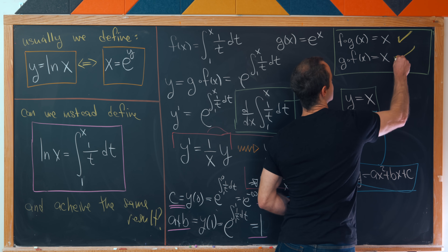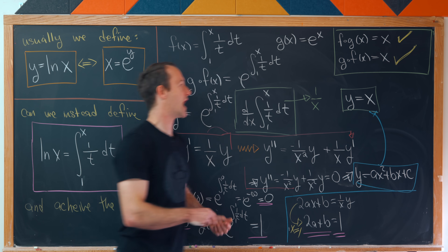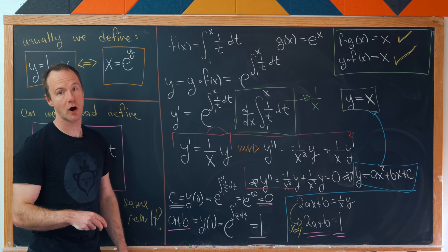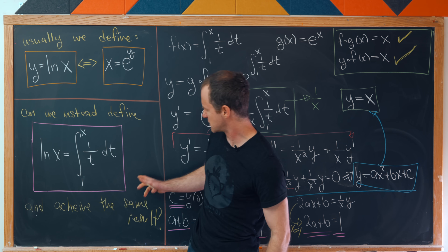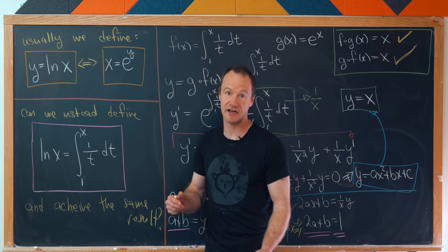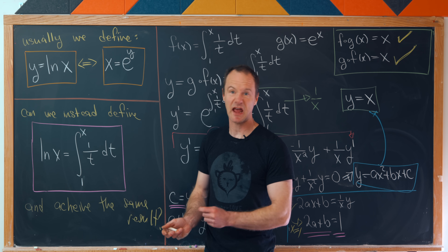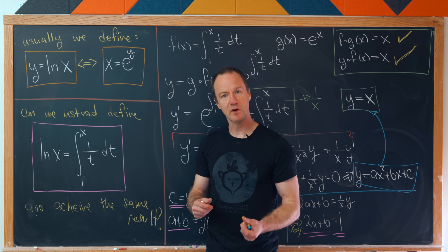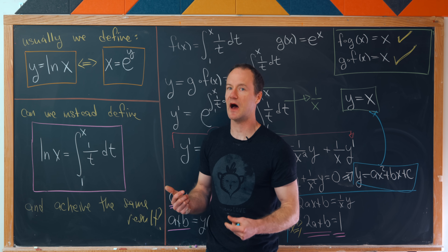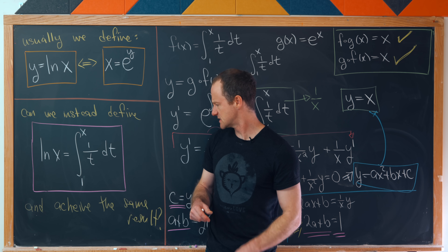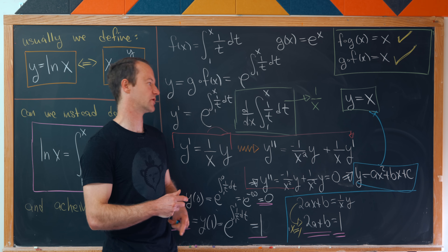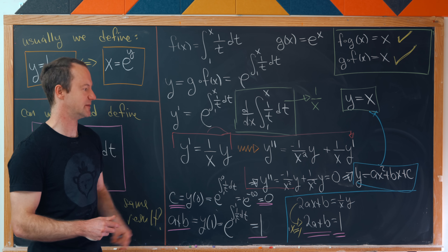So g∘f(x) = x as well. Either way we compose these two functions we get the identity function, which means they really are inverses of each other. This confirms that we can define the natural log in terms of the integral and achieve the inverse of the exponential function. We're not doing anything surprising — if this didn't work, the logarithm wouldn't be well defined — but it's a fun exercise that highlights some interesting techniques.